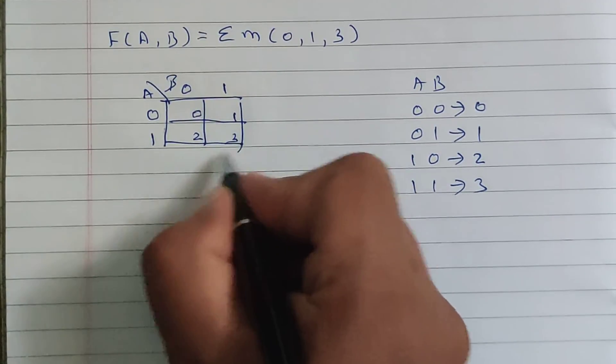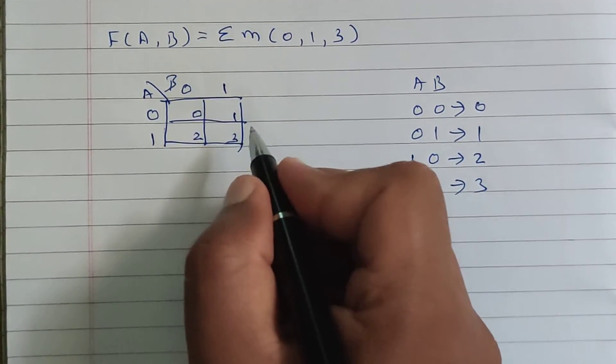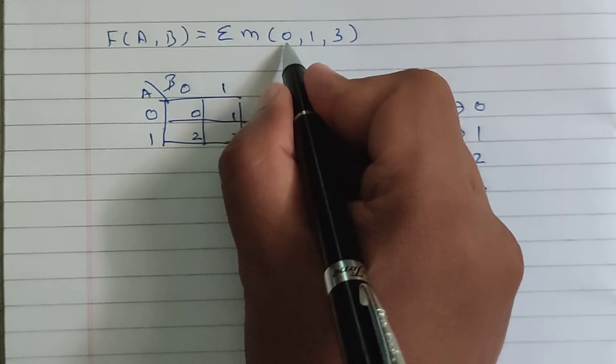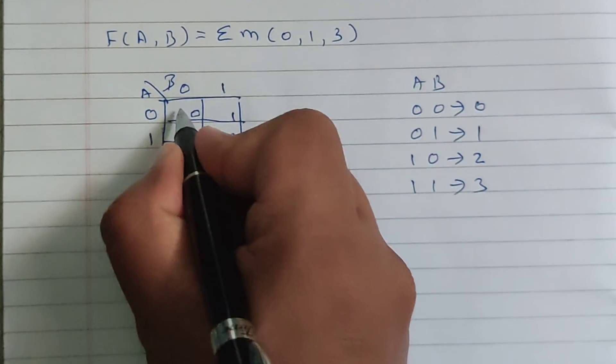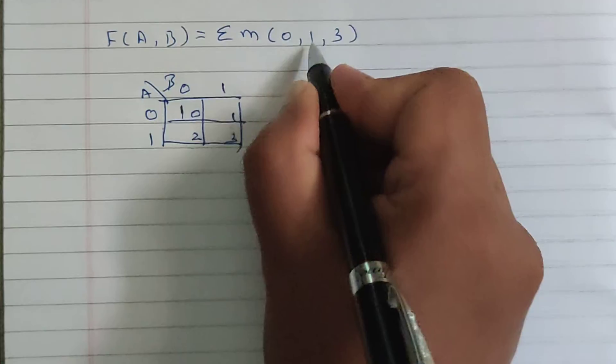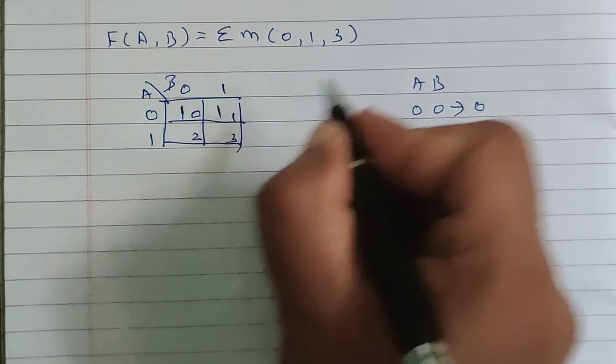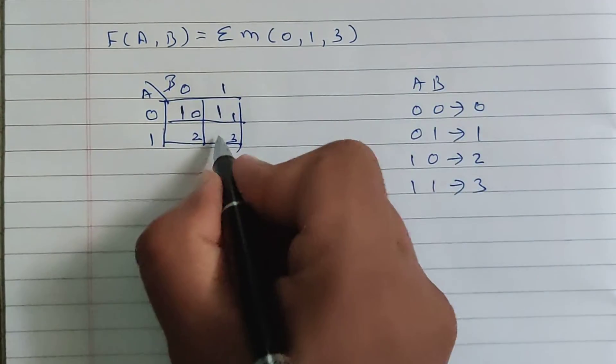So these are values of each cell: 0 1 2 3. Now min terms are 0 1 3. So in place of 0, we will write 1, in place of 1, we will write 1, and in place of 3, we will write 1.